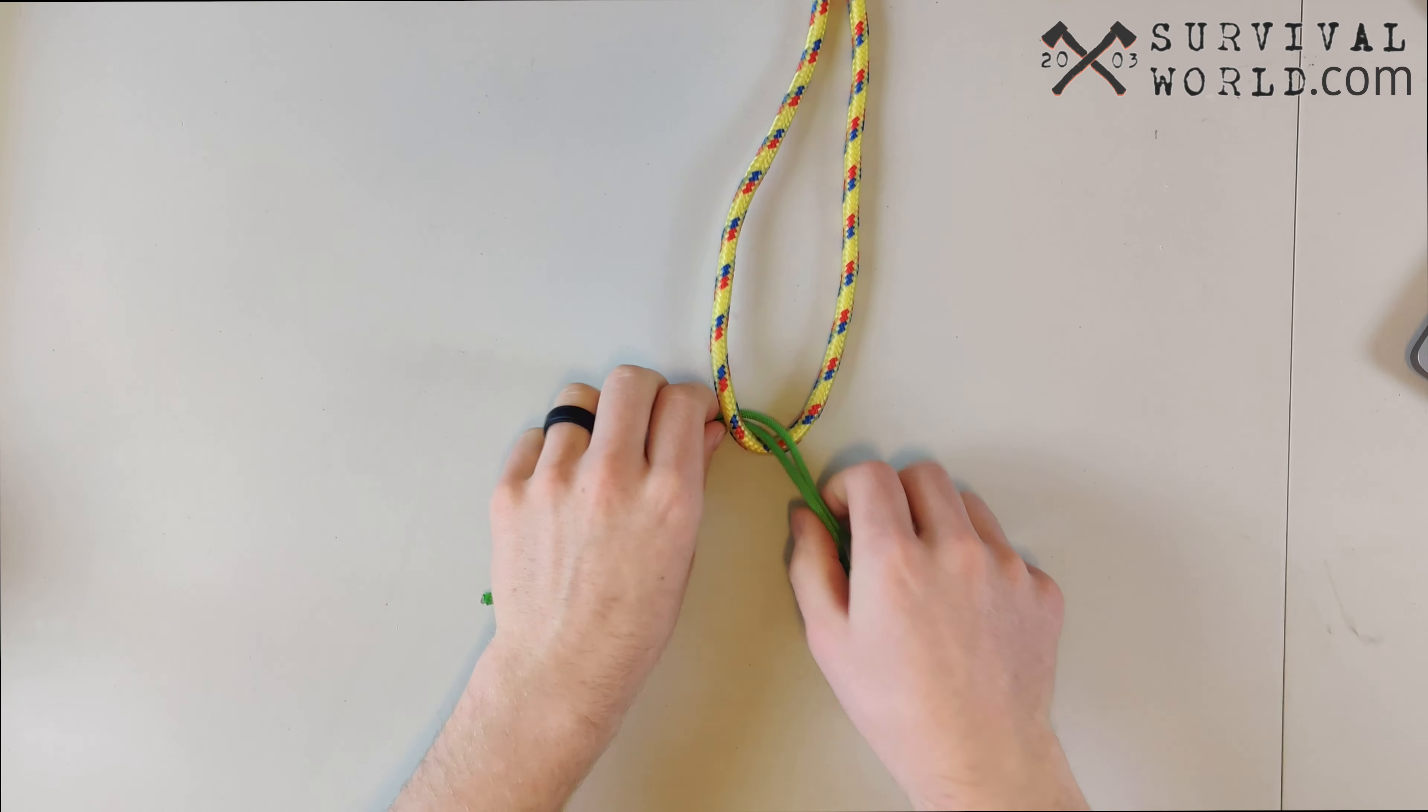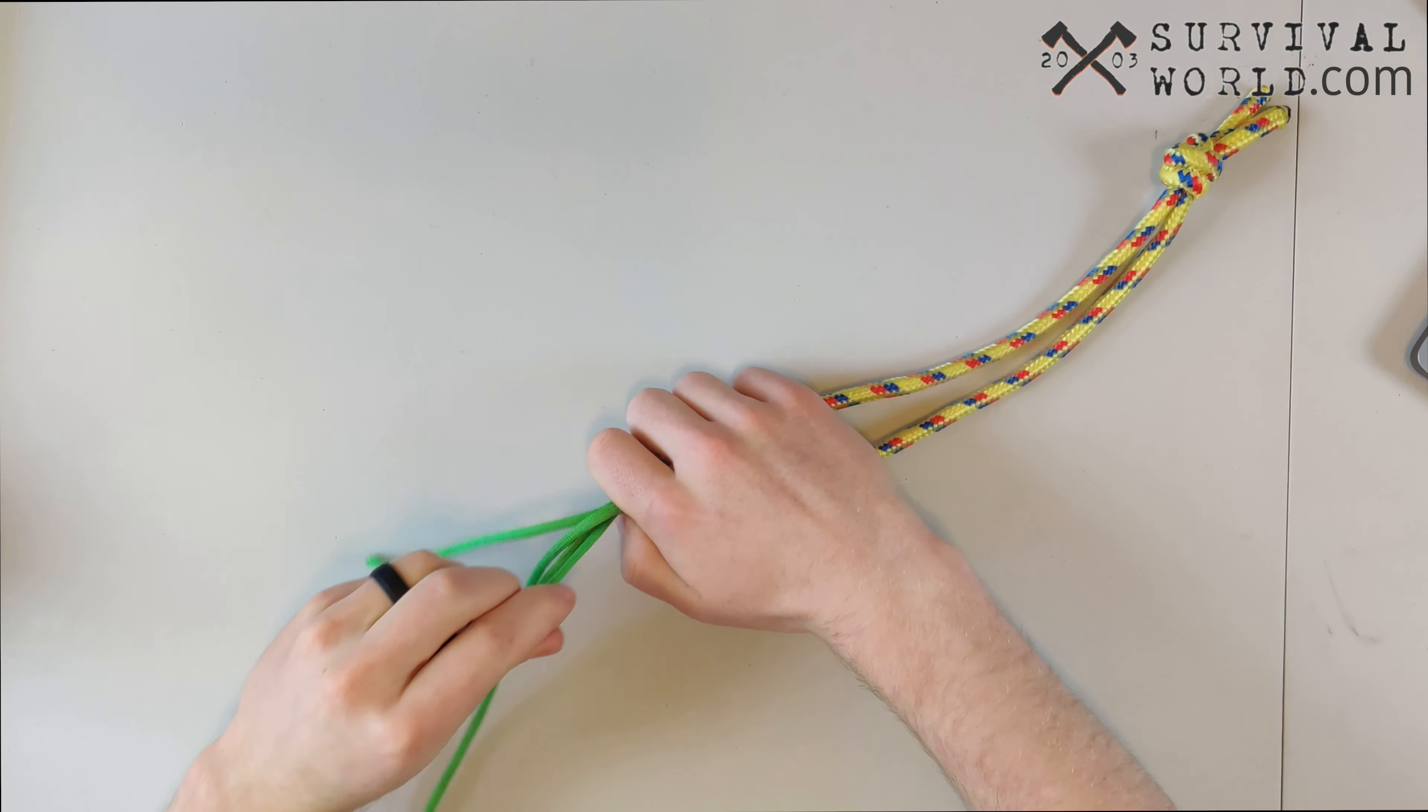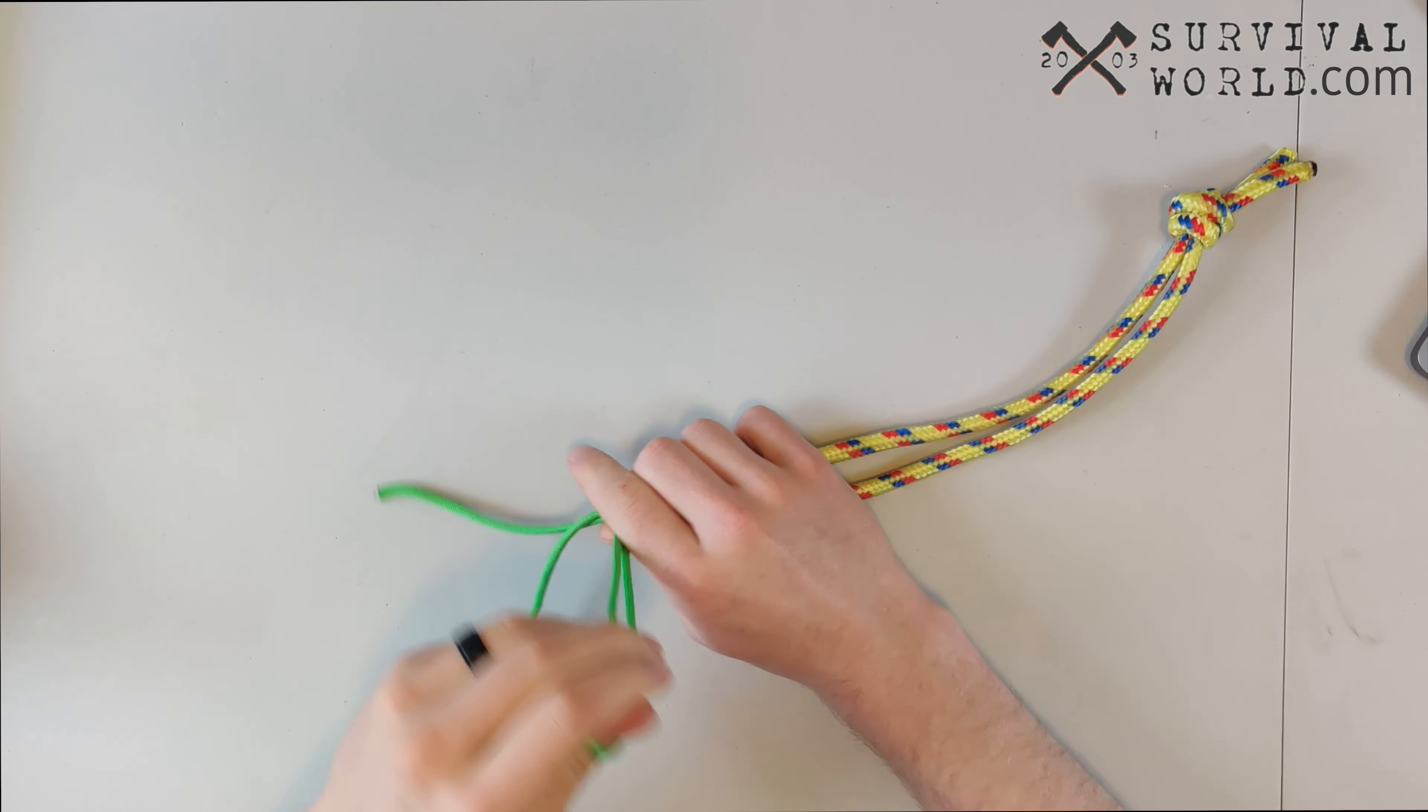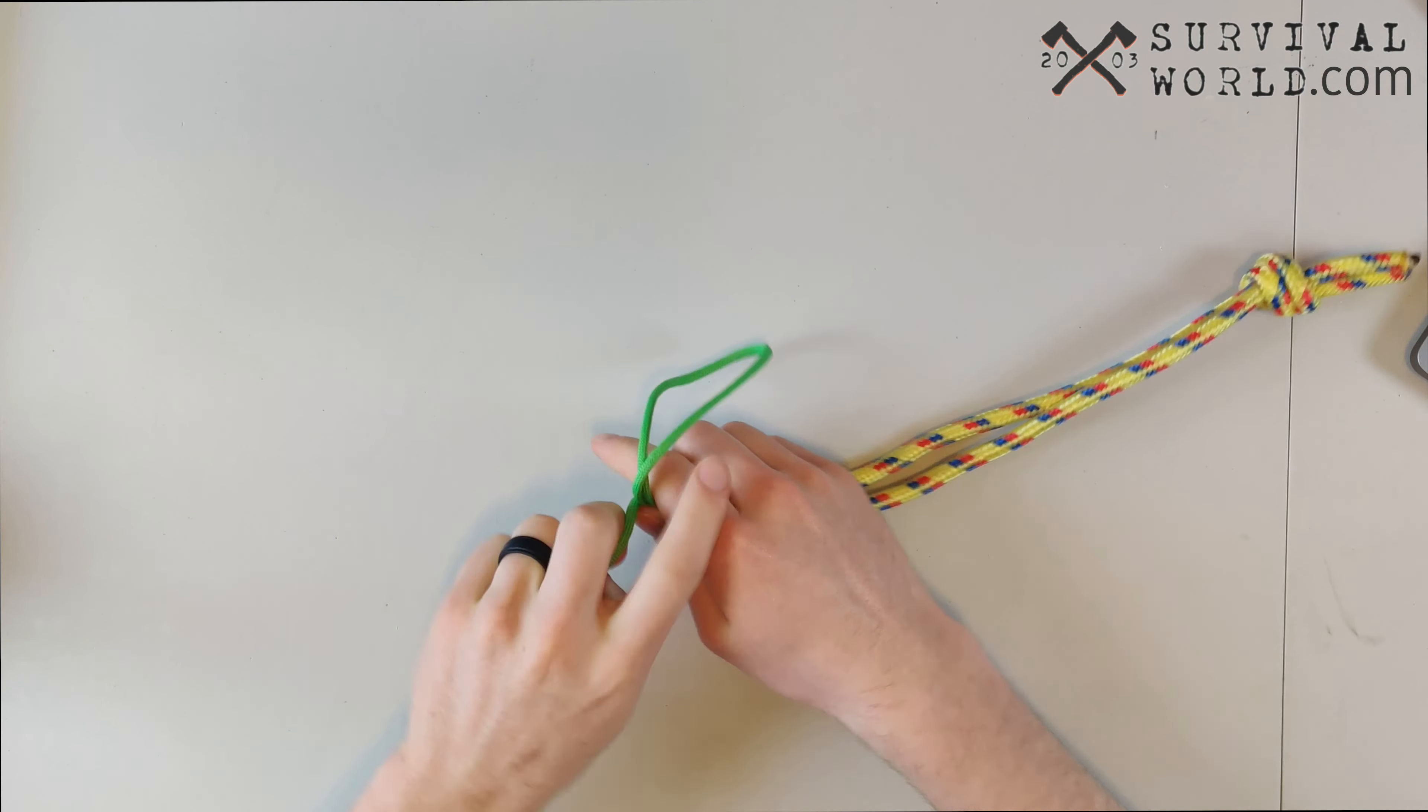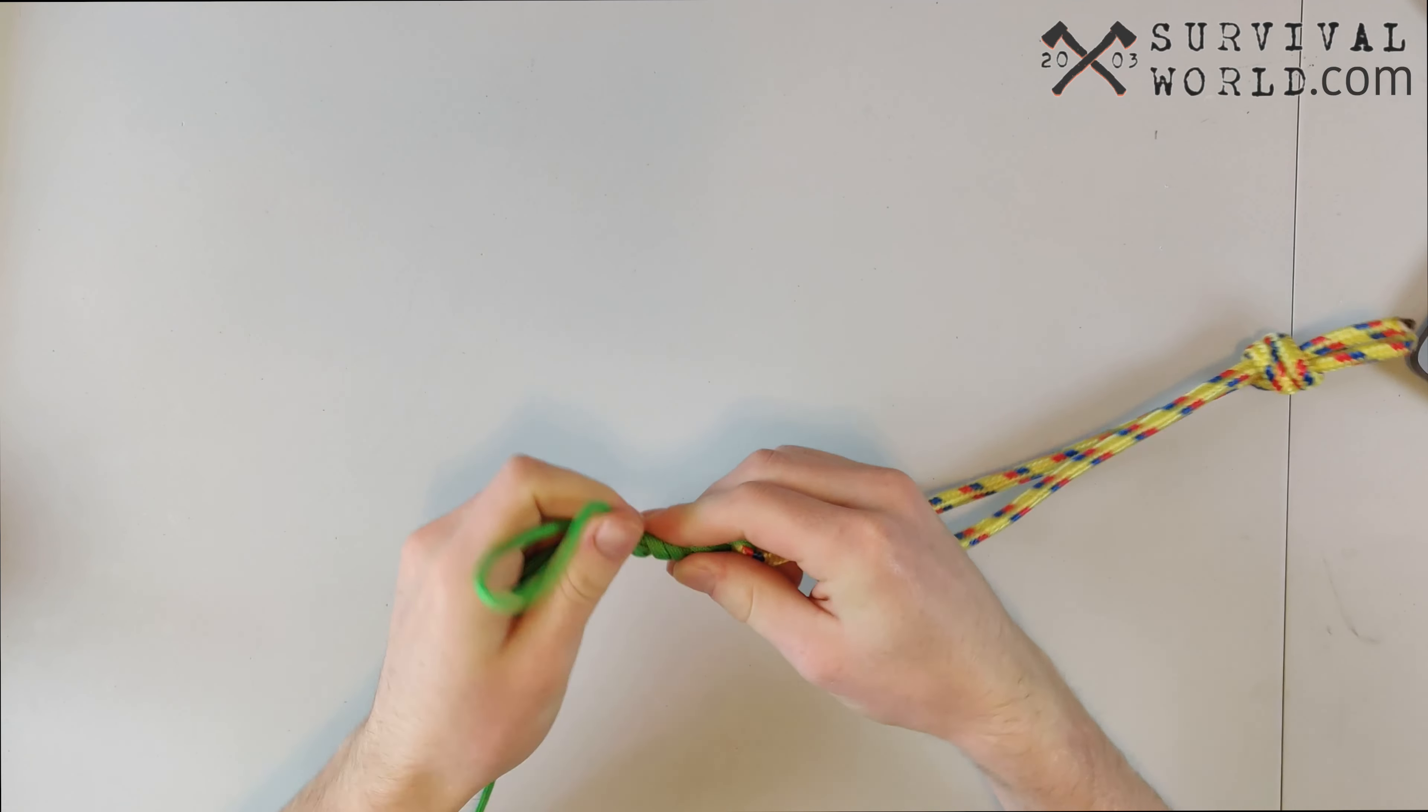Once you've ran it through the hook like this, we're just going to simply twist it around itself. We're going to twist it around itself. You'll probably want to do it about four times with fishing line, but this is paracord so I'm just going to do it about three times so I can still make this knot easy for you guys.